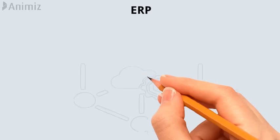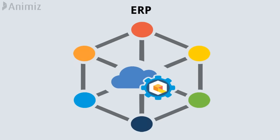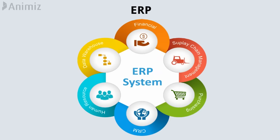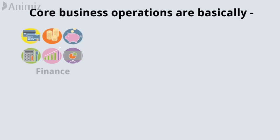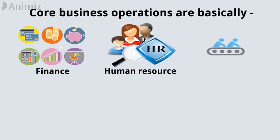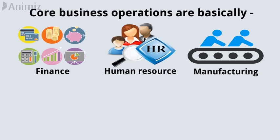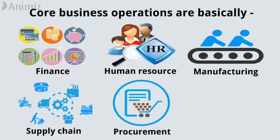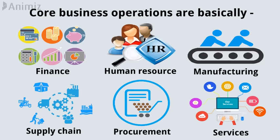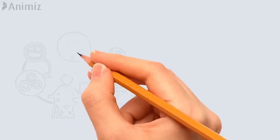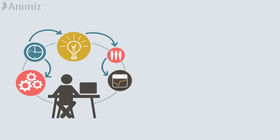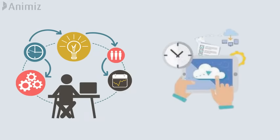ERP is a platform a company uses to integrate all the core business operations required to run a company. Core business operations include finance, human resources, manufacturing, supply chain, procurement, services, and more. ERP helps to manage all these operations in an integrated system effectively.